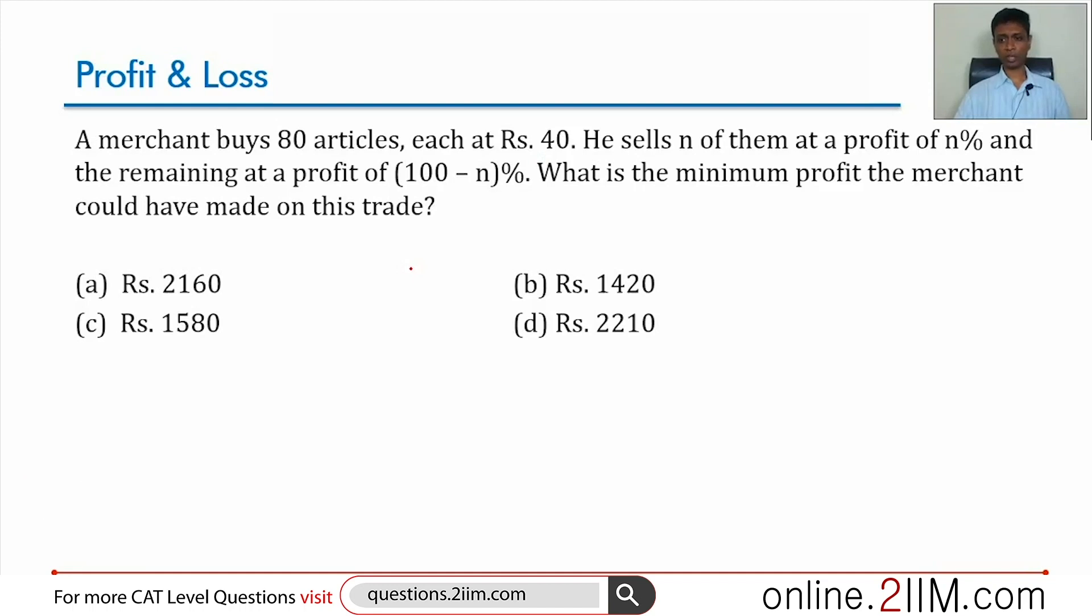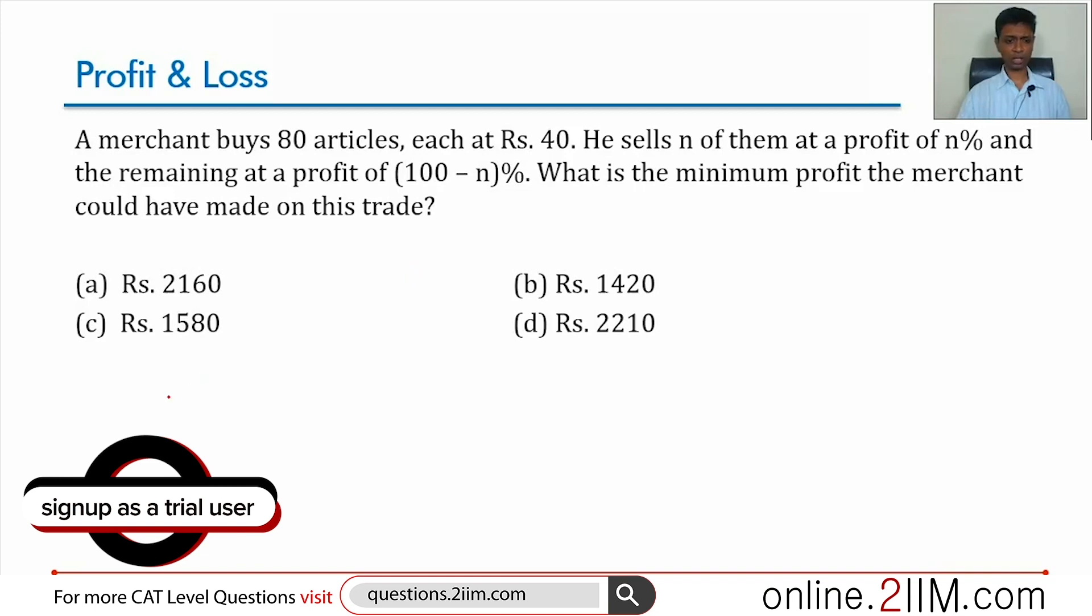He sells n of them at a profit of n percent and the remaining at a profit of 100 minus n percent. What is the minimum profit the merchant could have made on this trade? For n of those articles, he makes n percent.